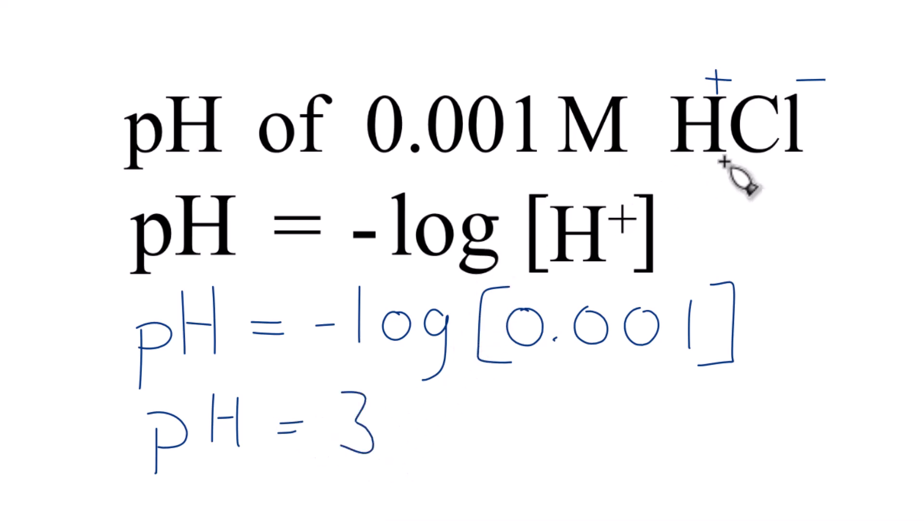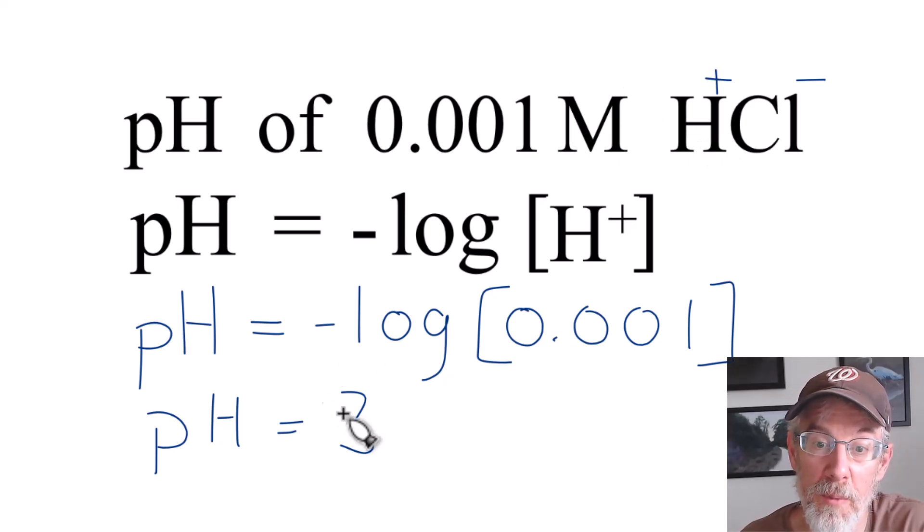And that makes sense. Hydrochloric acid, it's an acid. We should have a pH below 7, and we do. It's 3.